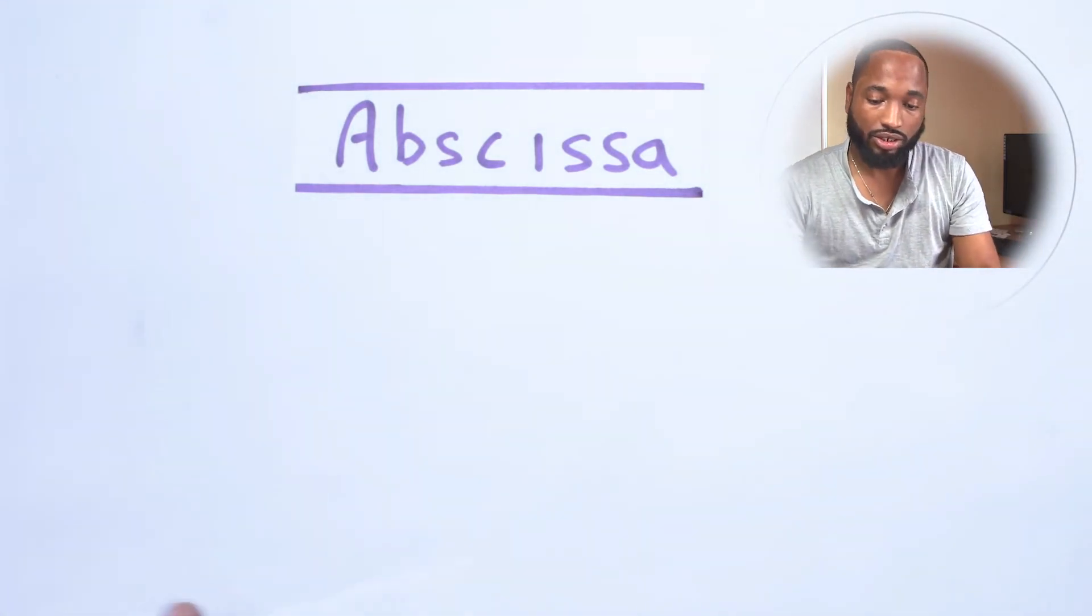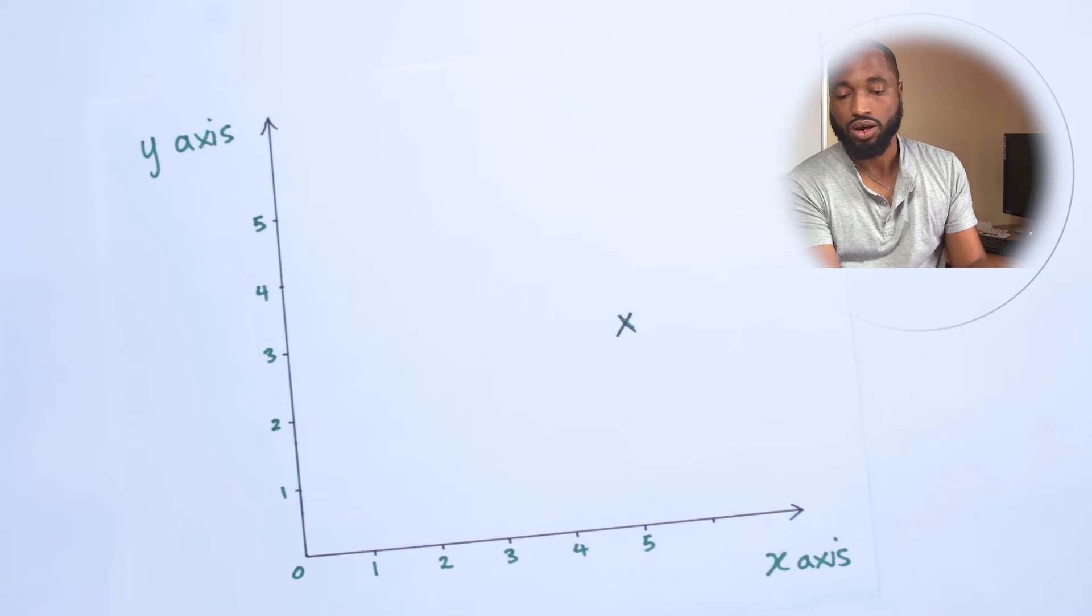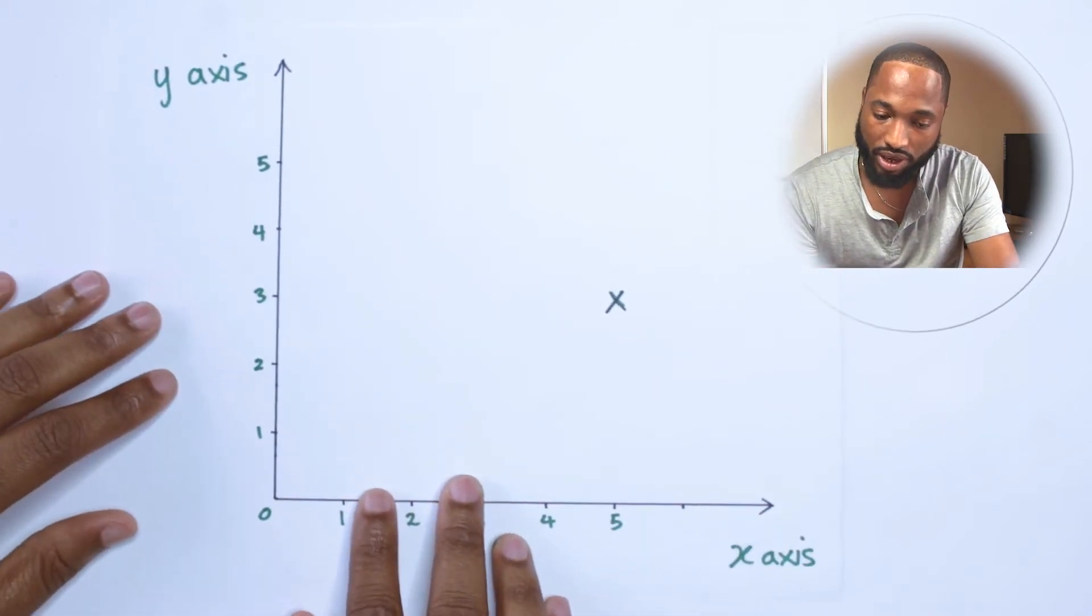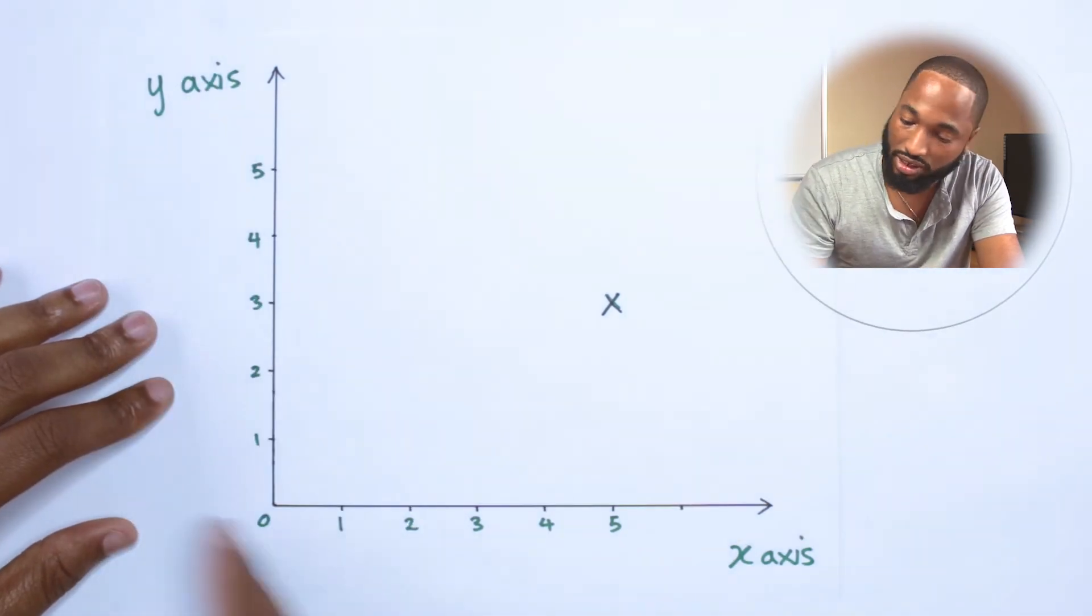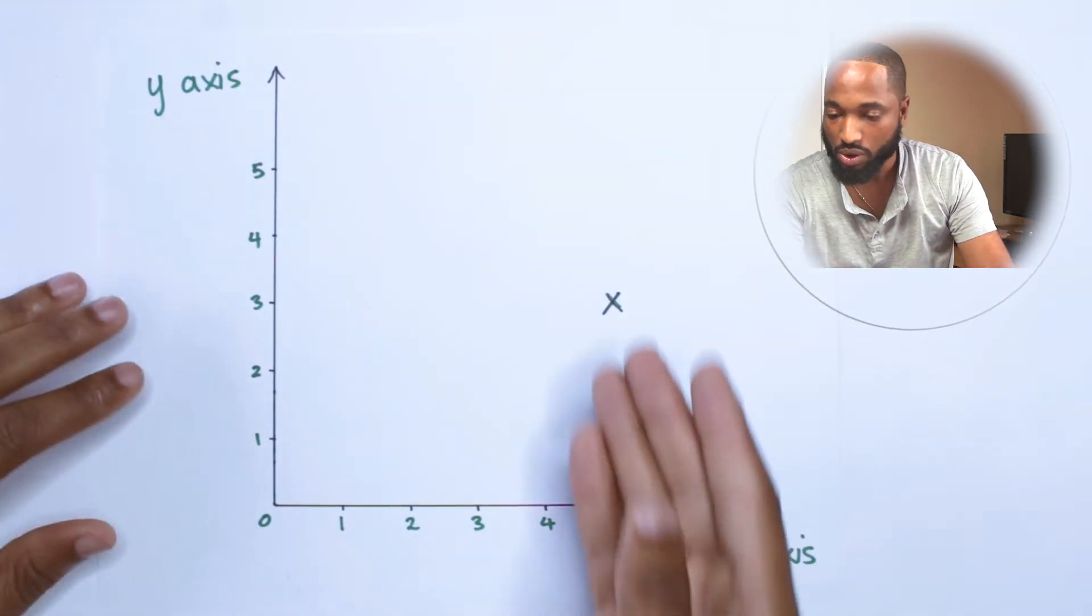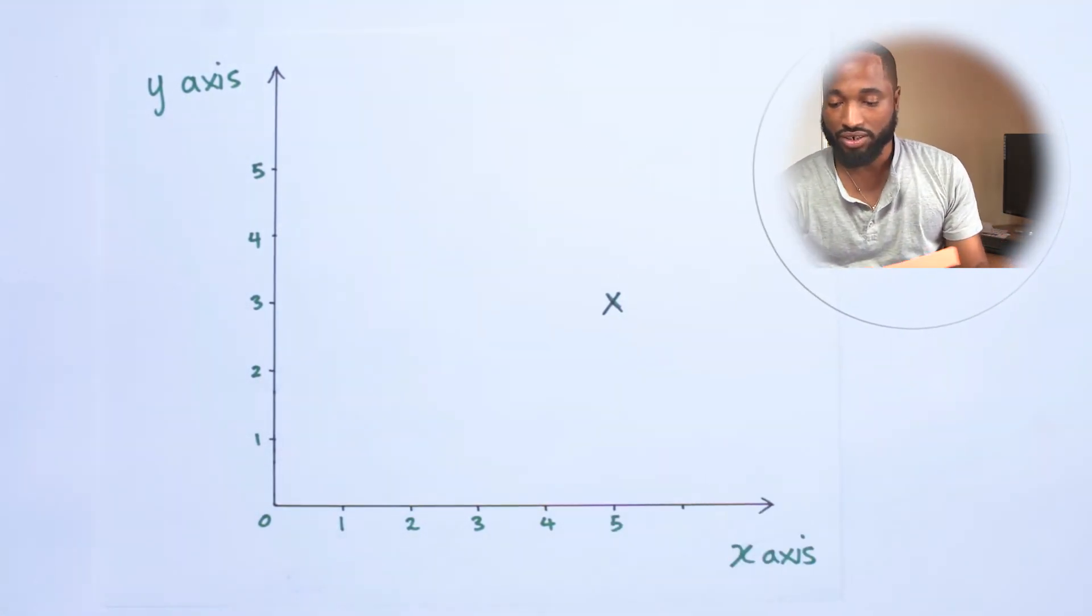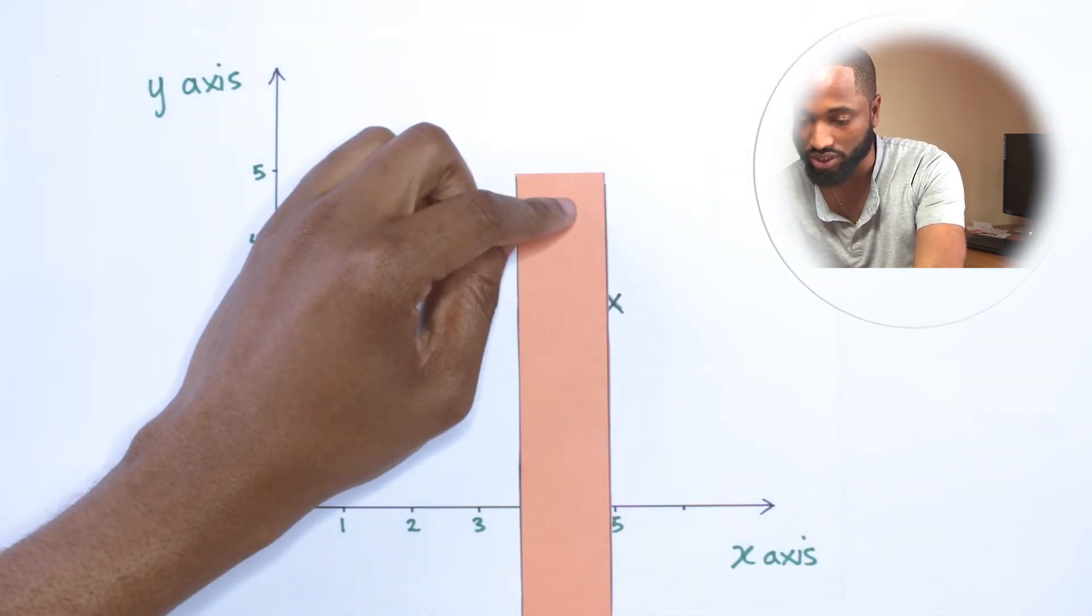And that's the abscissa. So quick example here, we have a Cartesian plane with an x-axis, y-axis, numbers going. We could find the value of that point. We line up our ruler, see where it's going down to the number five.